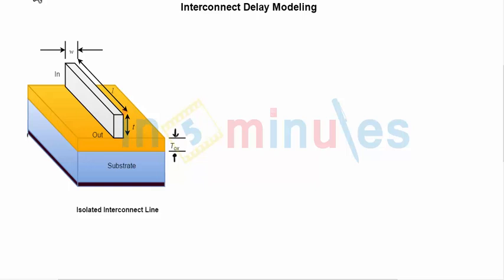Let's start with a simple isolated interconnect line. Here is my interconnect where this is my input and this is my output. The dimensions of the interconnect line are shown with the length L, width W, and thickness T. This is the thickness of my oxide, which is TOX.